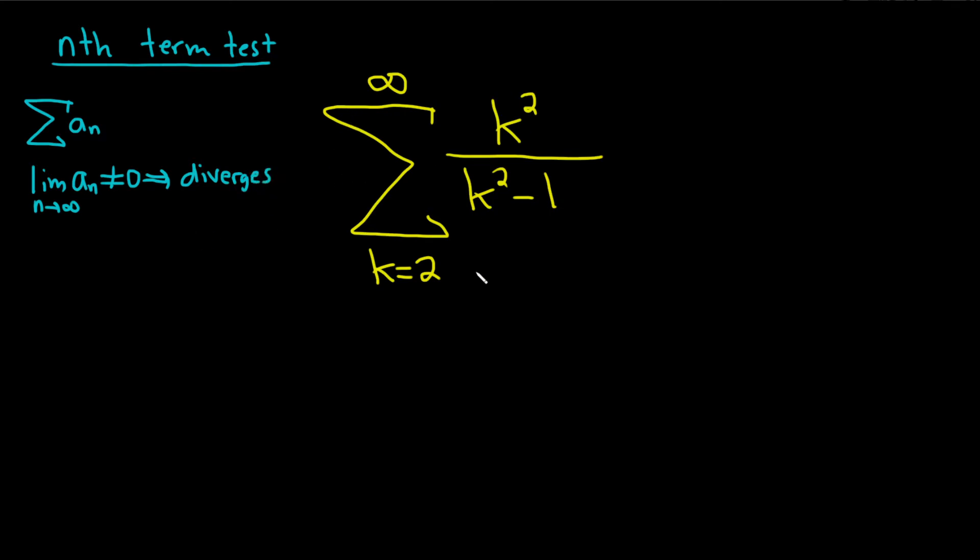So here, let's try to apply that test. And here it's not n, it's k. So this piece here is going to be our a sub k. Let's apply this test, this is a very powerful test. By the way, if you get zero, nothing happens, you can't do anything. So it's only when you don't get zero, that's when you can say divergence.